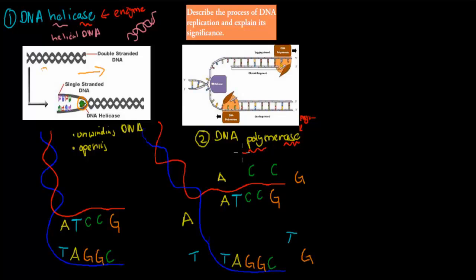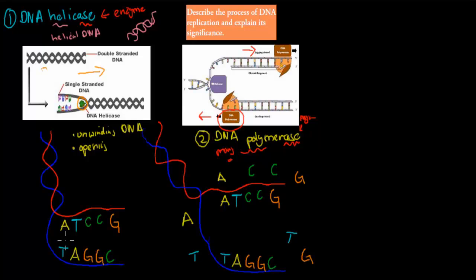Poly comes from 'many.' What DNA polymerase does is it attaches different types of nucleotides to the opened-up DNA strands. So here you can see helicase has opened up the structure — now we have these two strands. Then the DNA polymerases come in: one will go in the direction of helicase, and one will go in the opposite direction.